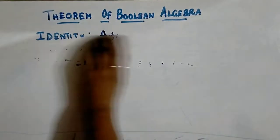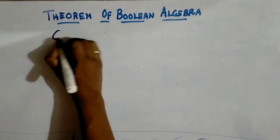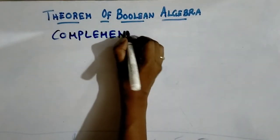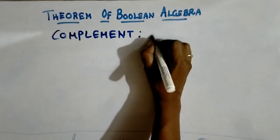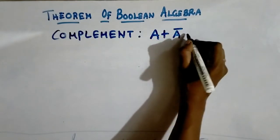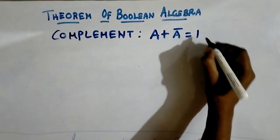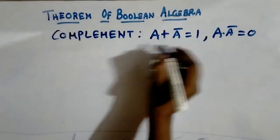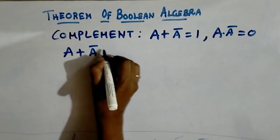The next one is complement. Complement is nothing but inversing — that is called a complement. We have already studied the NOT gate. Which gate is used to complement your value? The NOT gate is used to complement your value. So a plus a-bar equals 1. We will always refer the complement as a-bar or a-dash. The other one is a dot a-bar equals 0.